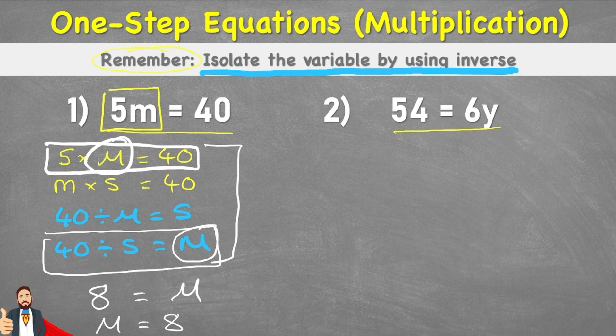Looking at this second example I have 54 on one side and I have the equals in the middle and 6y, which basically means 6 times y on the other side. But what I want to do, I want to isolate this y. At the minute it's connected to the 6 but I want it on its own. So how can I get rid of this 6 times? Well I'm going to use the inverse.